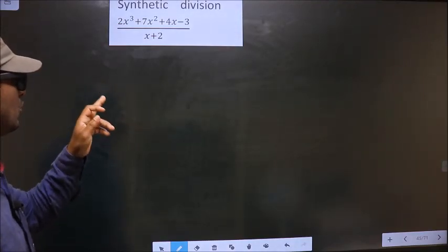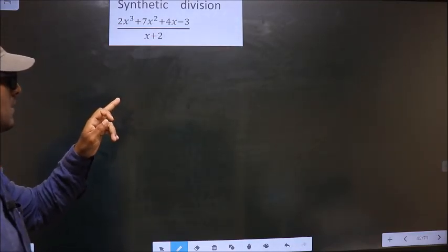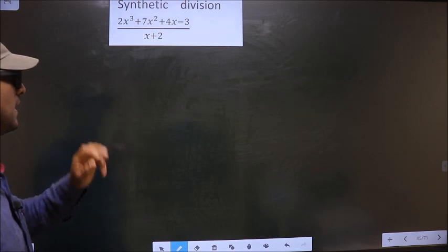Synthetic division. 2x cubed plus 7x squared plus 4x minus 3 by x plus 2.